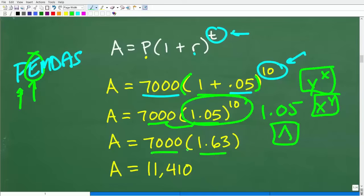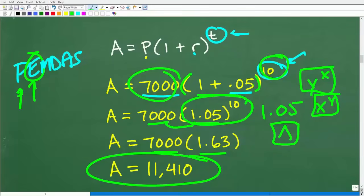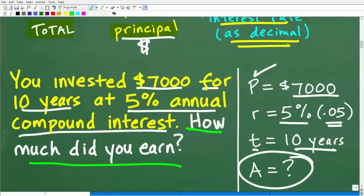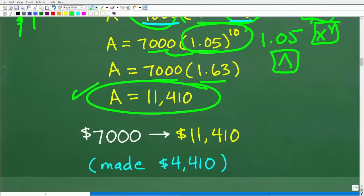And now, finally, we can multiply by 7,000 and our amount is $11,410. Okay, so we invested $7,000 for 10 years at 5% annual compound interest, and our investment is worth $11,410. But the question was what? The question was, you've got to be very careful here, how much money did we earn? Okay, so we already had that $7,000. The investment didn't earn that for us, right? So what we made on the investment, we have to take this amount, the total amount, subtract away our principal. So we made $4,410.